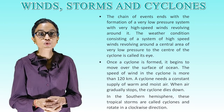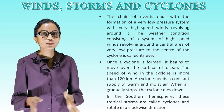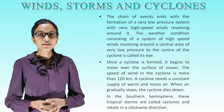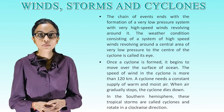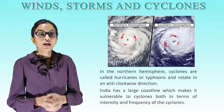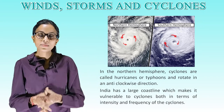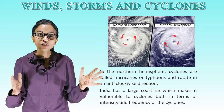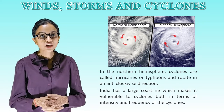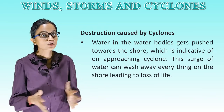Once a cyclone is formed, it begins to move over the surface of the ocean. The speed of wind in the cyclone is more than 120 km/h. A cyclone needs a constant supply of warm and moist air; when that supply gradually stops, the cyclone dies down. In the southern hemisphere, these tropical storms are called cyclones and rotate in a clockwise direction. In the northern hemisphere, cyclones are called hurricanes or typhoons and rotate in an anti-clockwise direction. India has a large coastline which makes it vulnerable to cyclones both in terms of intensity and frequency.